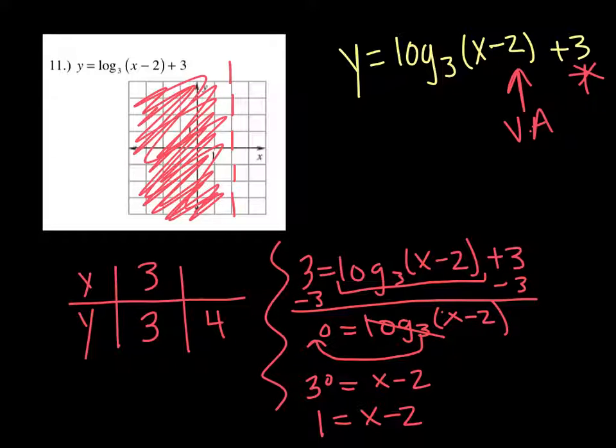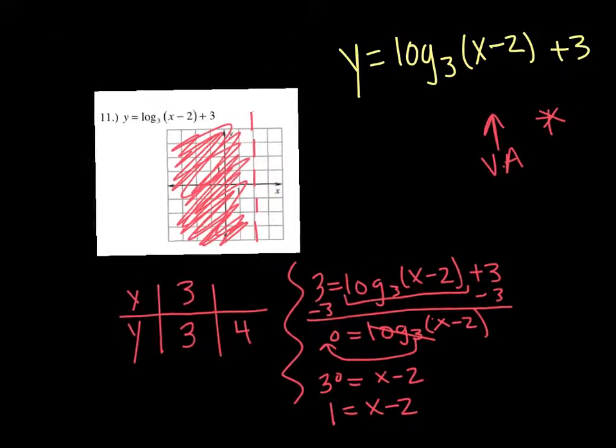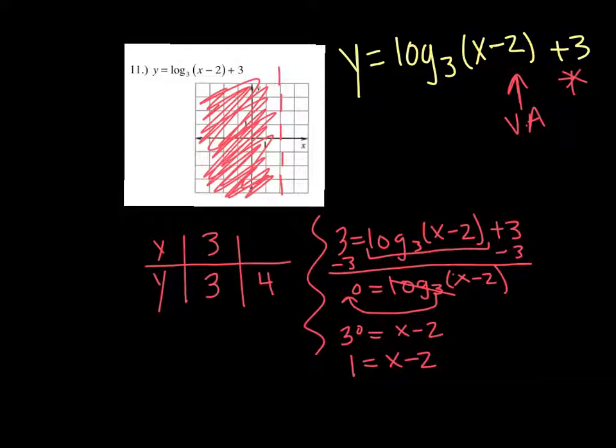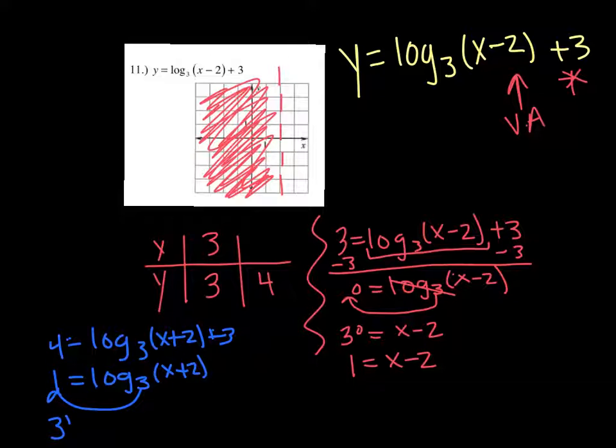And then let's plug in 4. I ran out of room because I wrote that too big. So 4 = log base 3 of (x - 2) + 3. We subtract the 3 and get 1. Undo the log. Get 3 to the first power equals x - 2. Log is now gone. 3 to the first is 3.